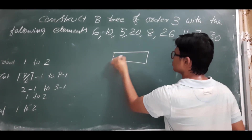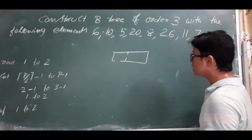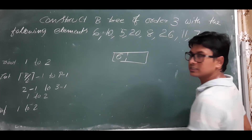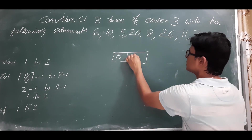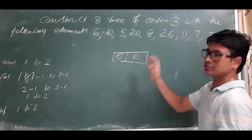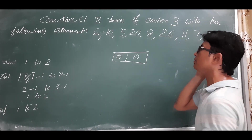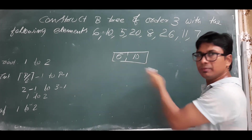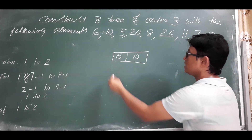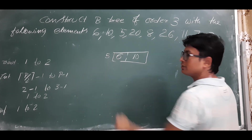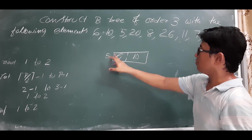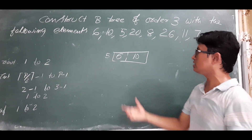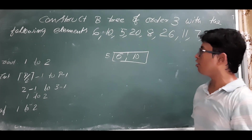Maximum I can have two keys, so I will take two spaces. First I insert 6, then I insert 10 — there is space so no problem. Now I want to insert 5. Elements should be in increasing order, so 5 must come before 6, giving us 5, 6, 10. But I cannot insert 5 here — it will cause an overflow condition.